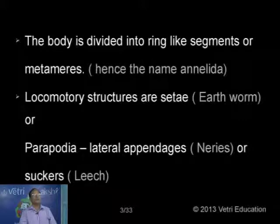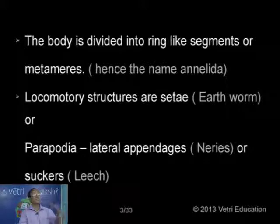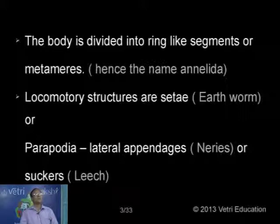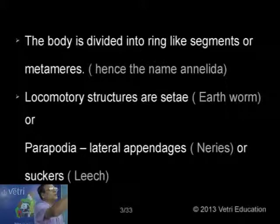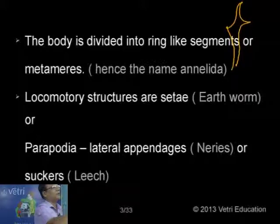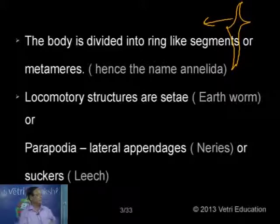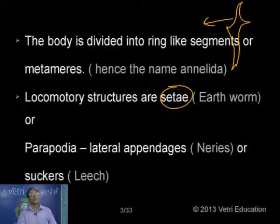The body is divided into many ring-like segments or metameres, hence the name Annelida. Each segment is in the form of a ring — annulus — also called metamere. We have different types of locomotory structures. In some cases, for example earthworm, we have sigmoid-shaped bristle-like structures called setae, which are the locomotory structures.